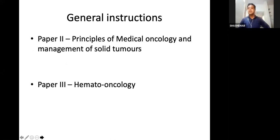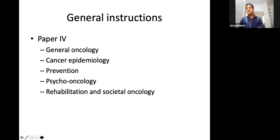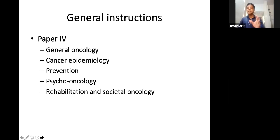Paper two deals with the principles of medical oncology and solid tumors. Paper three is hemato-oncology. These two are relatively easy compared to paper one and four. Paper four is a tricky paper because it has varied topics like general oncology, epidemiology of cancer, preventive oncology, psycho-oncology, rehabilitation, and societal oncology — almost all covered in the last 400 pages of DeVita. Please be thorough with the first 400 and last 400 pages of DeVita so that you don't find much difficulty in getting through these exams.